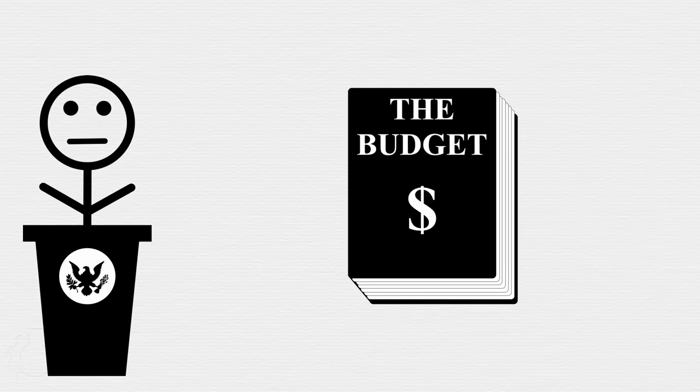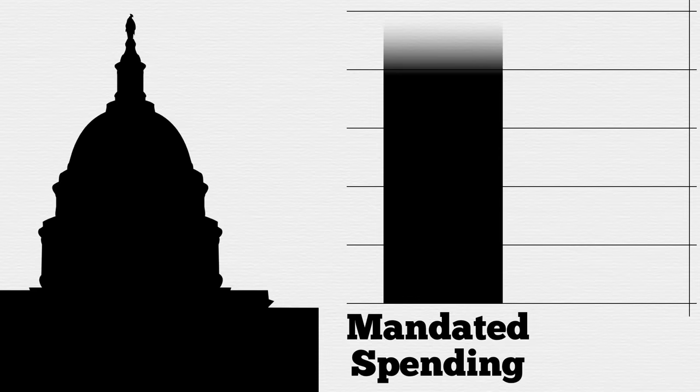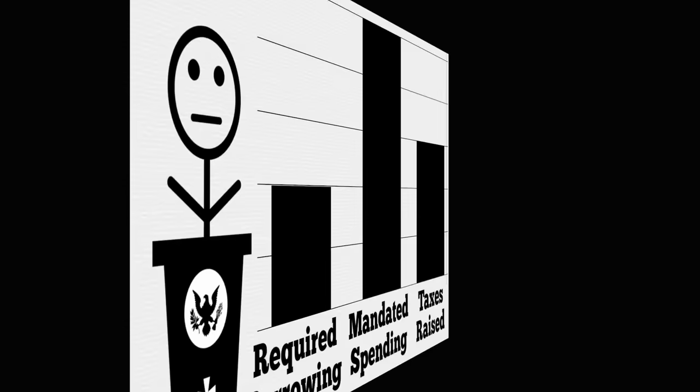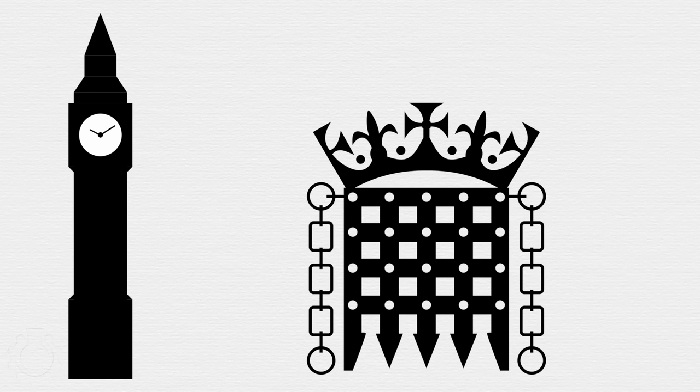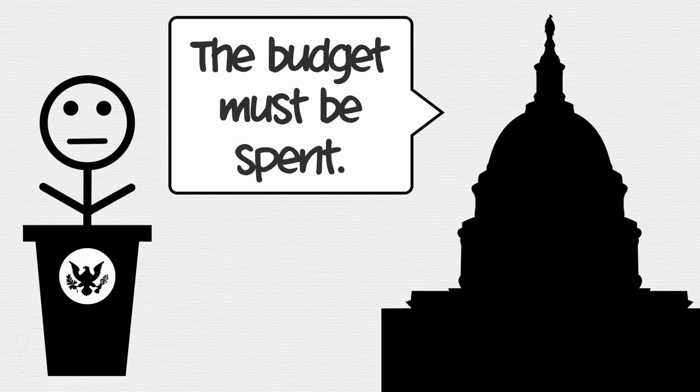As long as more taxes come in than spending goes out, everything is fine. But almost always, Congress puts more stuff in the budget than they cover with taxes, which means the President must borrow money to cover the difference. In most countries, the story ends here, because if their legislatures approve more spending than they have income, they've also implicitly approved the necessary borrowing. But not in America. Here, Congress also limits the total amount of debt the United States can have.